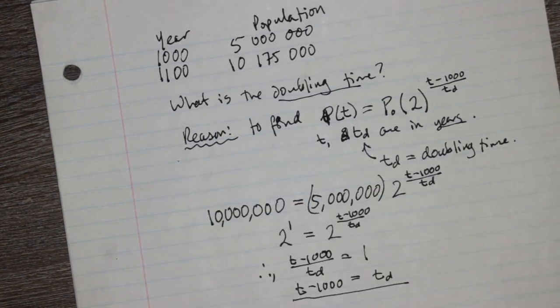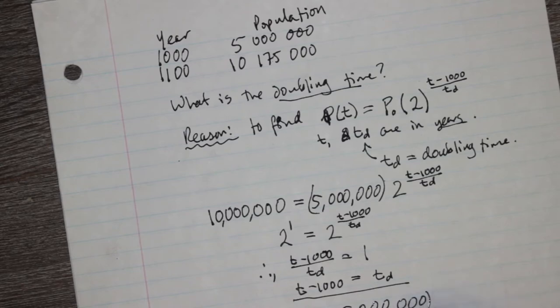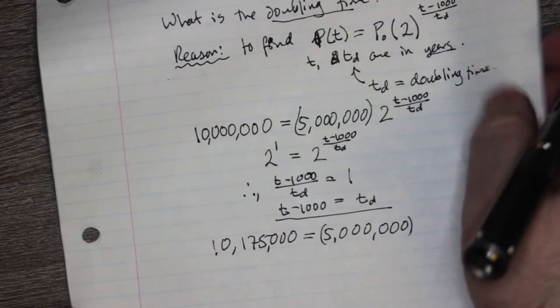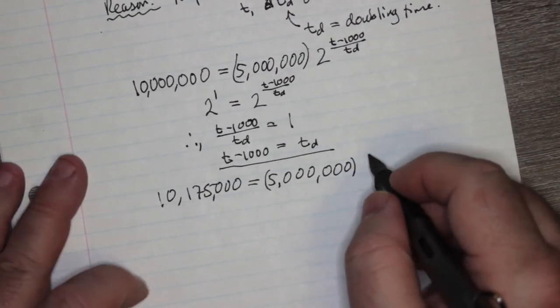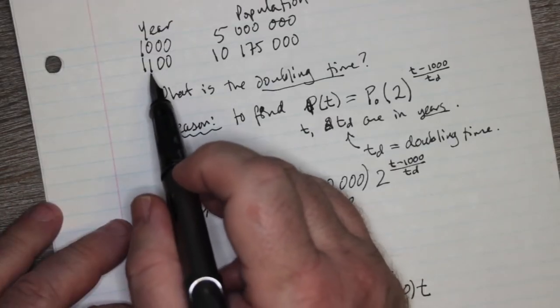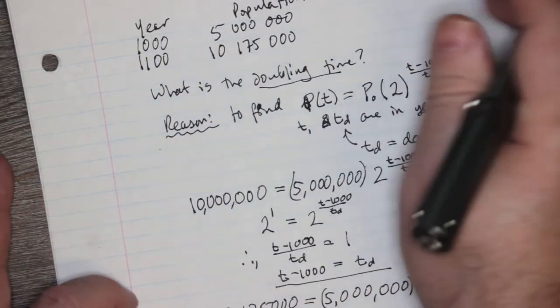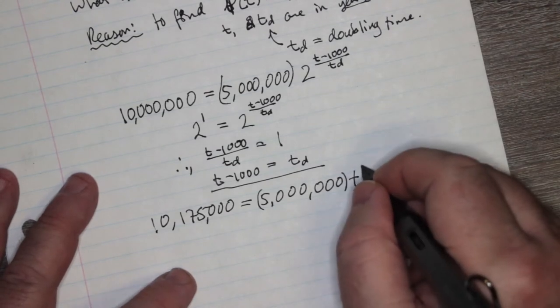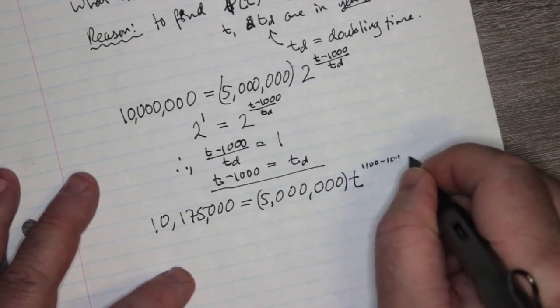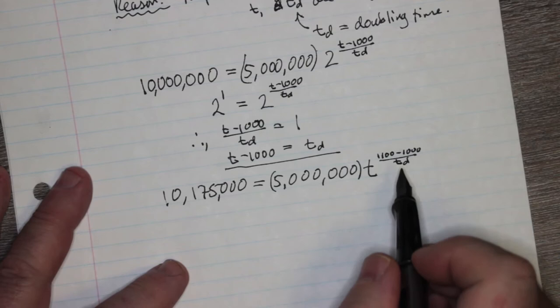So in the year 1,100, the population was 10,175,000. And this is equal to 5 million, as before, multiplied by 2. Now I have a number t now. I have 1,100. So this is my 1,100 minus my 1,000, so I'm subtracting this. So this is going to be 1,100 minus 1,000 over td. And look, you can feel the excitement building. There's only one unknown.